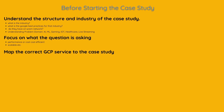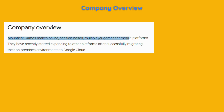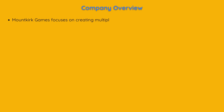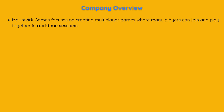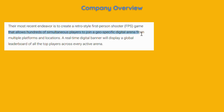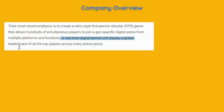Let's start with reading the company overview. Mount Kirk Games makes online, session-based, multiplayer games for mobile platforms. They have recently started expanding to other platforms after successfully migrating their on-premises environments to Google Cloud. Mount Kirk Games focuses on creating multiplayer games where many players can join and play together in real-time sessions. Their most recent endeavour is a retro-style first-person shooter (FPS) game that allows hundreds of simultaneous players to join a geo-specific digital arena from multiple platforms and locations.